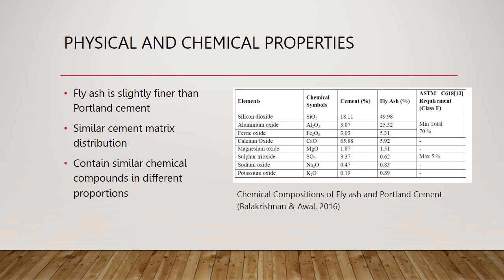To begin the comparison between concretes containing only Portland cement and those containing a mixture of Portland cement and fly ash, the physical and chemical properties of the two must be discussed. Physically, fly ash particles are slightly finer than those of Portland cement while their distributions within a cement matrix are similar. Chemically, the two share a lot of the same chemical compounds, however the proportions differ. For example, as shown in the table, Portland cement is mostly made up of calcium oxide while fly ash is mostly composed of silicon dioxide and aluminum oxide.